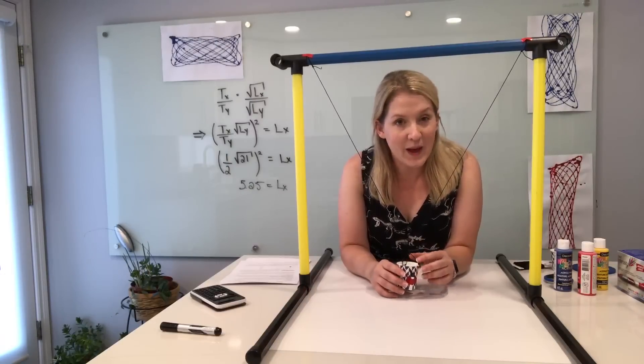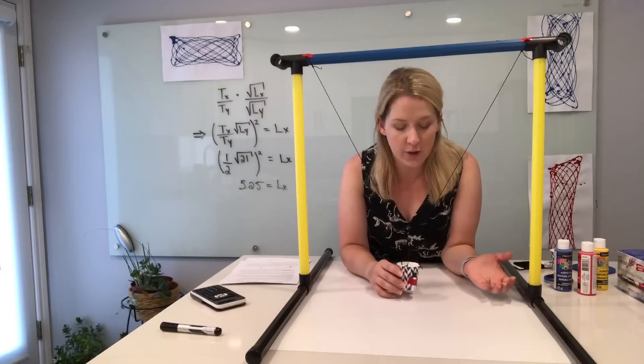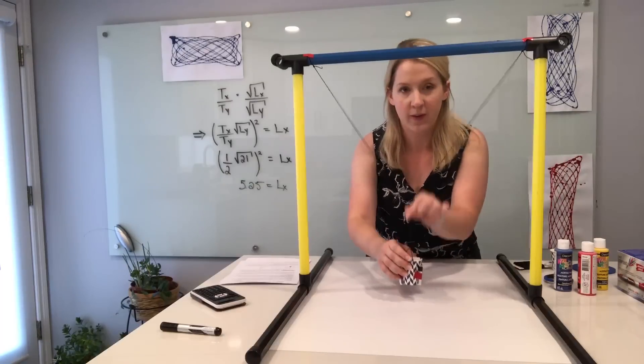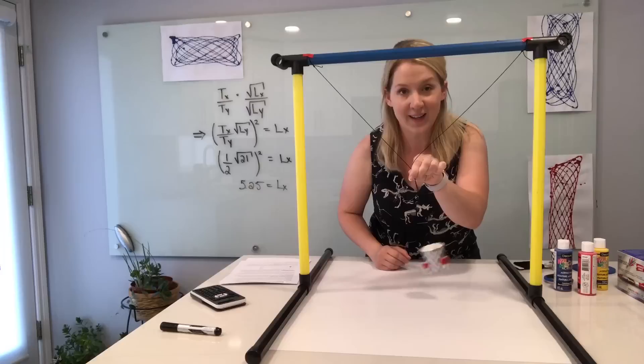The easiest Lissajous pattern is one with a one to two ratio. That means in the time it takes for one swing back and forth, there are two swings side to side.